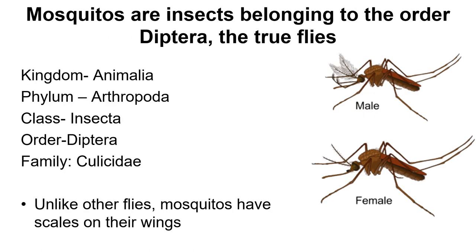Here's how mosquitoes are classified: of course they're in the kingdom Animalia; they're in the phylum Arthropoda, which includes many things with hard exoskeletons; they're in the class Insecta; they're in the order Diptera, meaning they have two wings. Most insects have four wings, but mosquitoes and other flies only have two — their second set of wings has been modified into little structures called halteres. They're in the family Culicidae. Unlike other flies, mosquitoes have scales on their wings, and we're actually going to use those scales as one of the identification tools as we go through the key.